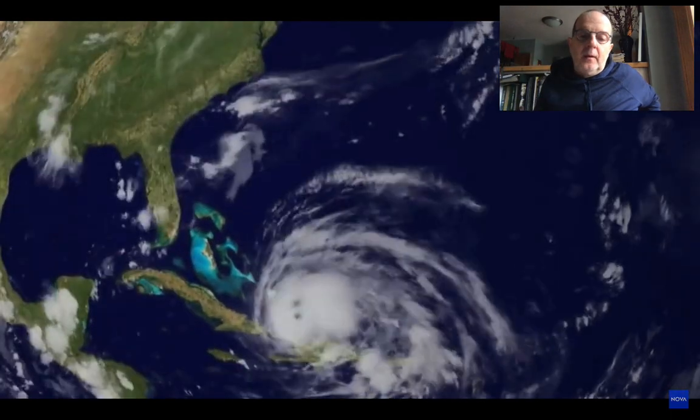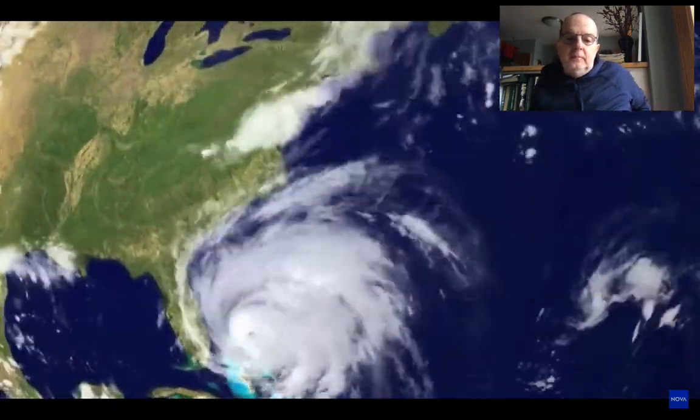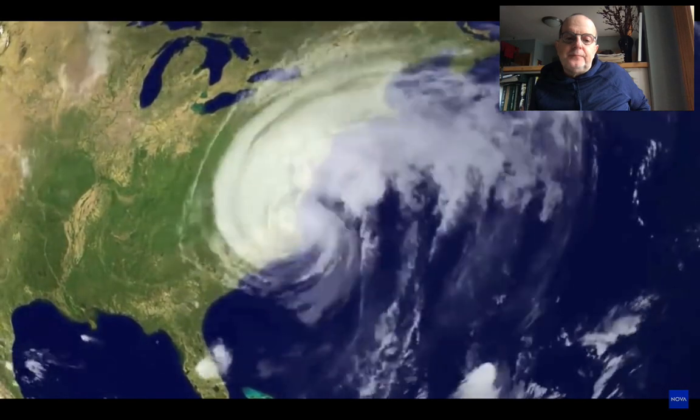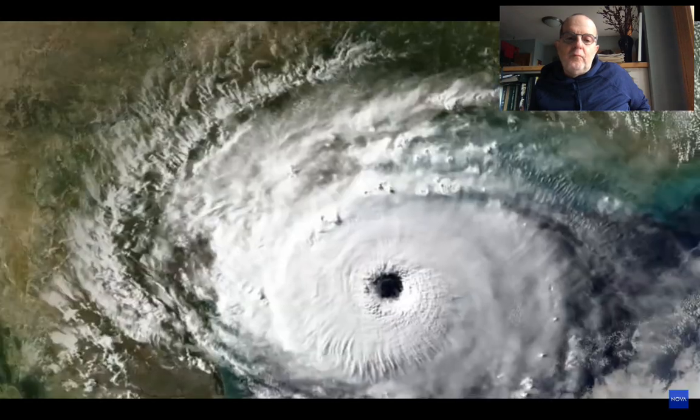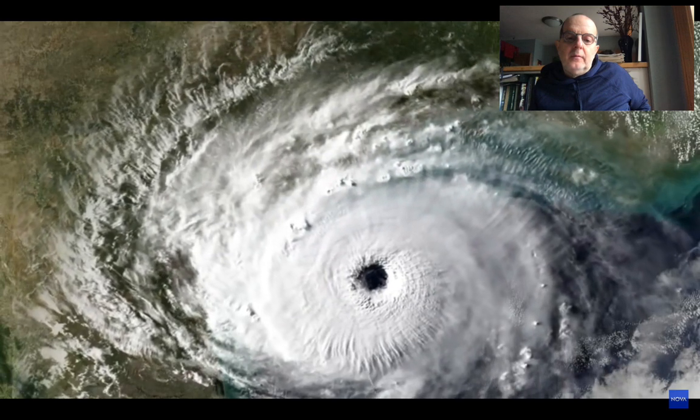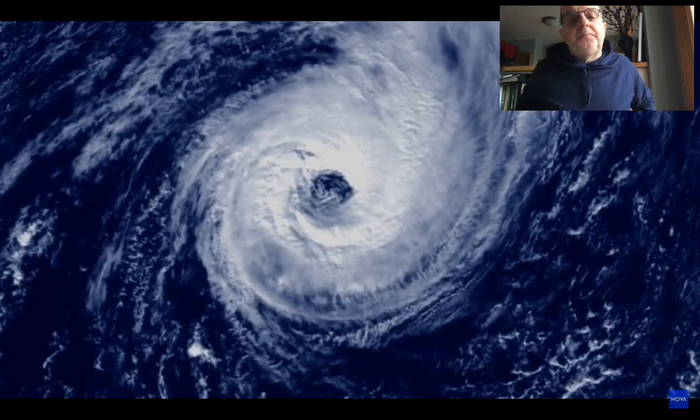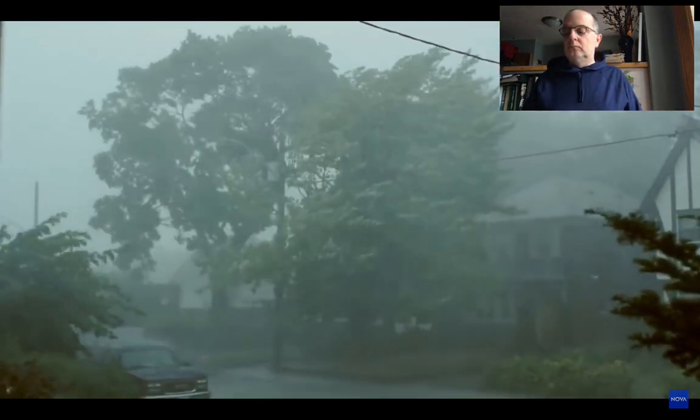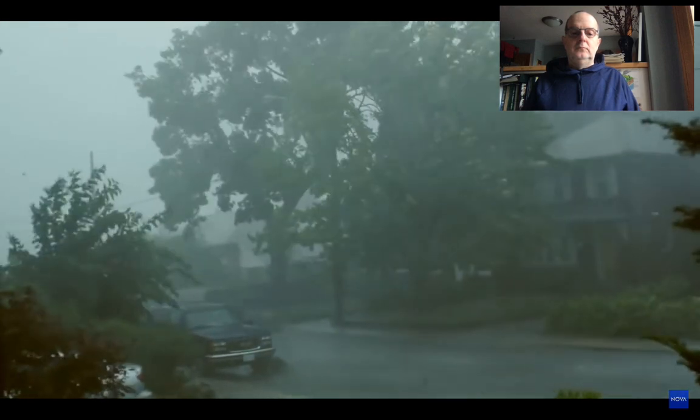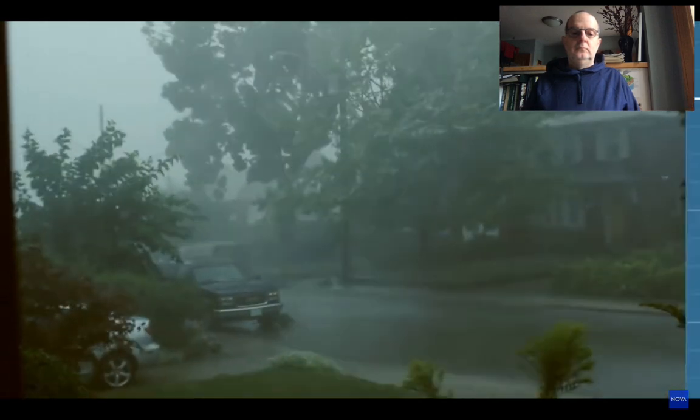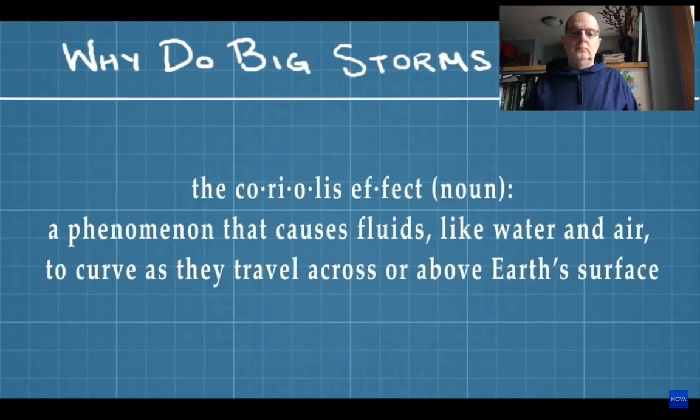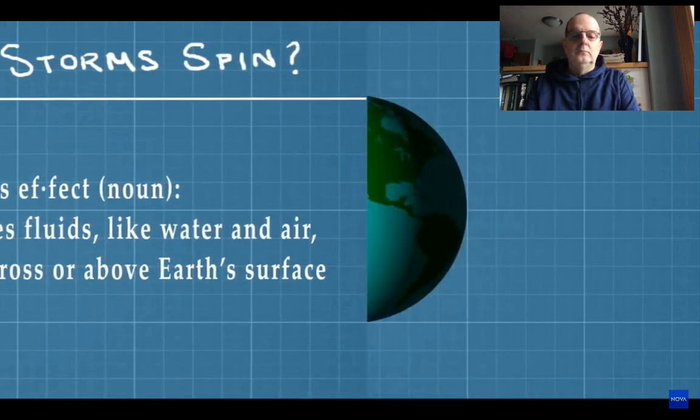If you've ever watched the news during a hurricane or wintertime nor'easter, you've probably noticed that big storms spin over time as they travel. In the Northern Hemisphere, they spin counterclockwise. But in the Southern Hemisphere, you'd see it spinning clockwise. Why do storms spin in different directions depending on their location? A storm's rotation is due to the Coriolis effect, a phenomenon that causes fluids like water and air to curve as they travel across or above Earth's surface. Here's the basic idea.